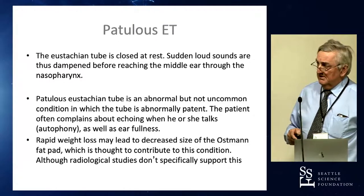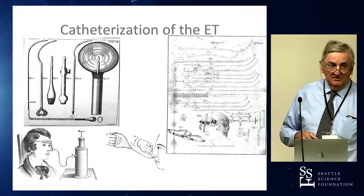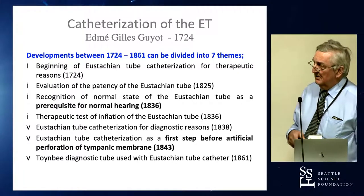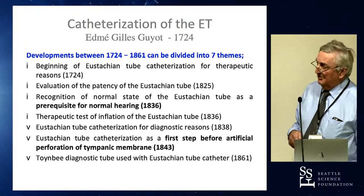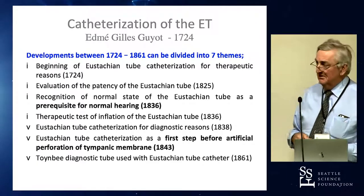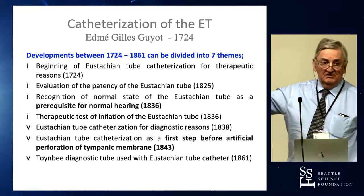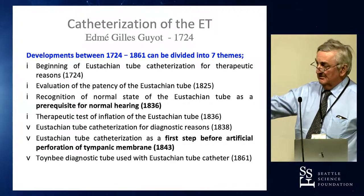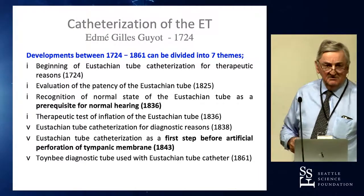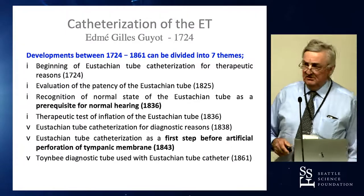But we're talking about tuboplasty. The process of dabbling with the Eustachian tube goes back many, many years — back to the 18th century. You can think of quite common processes such as trying to do politzerization, putting tubes up there to ventilate the ears. They realized that the state of the Eustachian tube was needed for ventilation to be able to hear correctly. Catheterization was the first step before using myringotomies, before the grommet was invented.